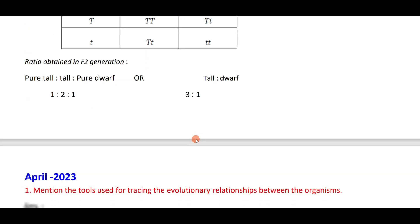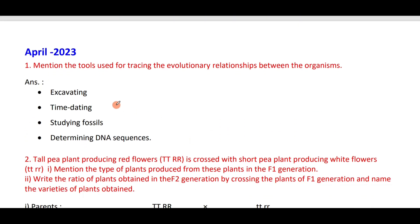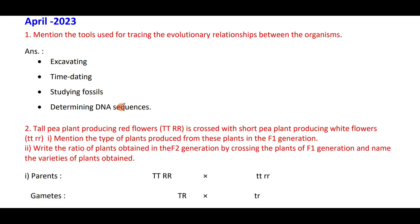Mention the tools used for tracing evolutionary relationships between organisms. The tools are: excavating, time dating, study of fossils, data mining, and DNA sequences. These are the evolutionary tracing tools which we use to trace evolutionary relationships.